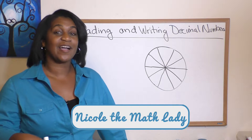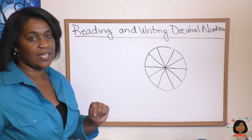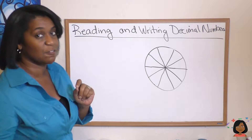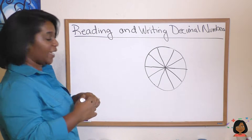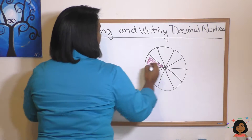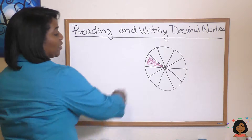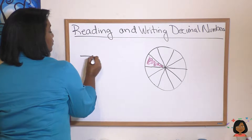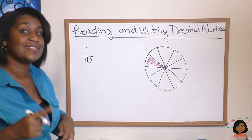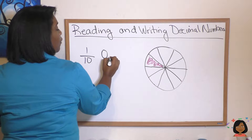Hi, it's Nicole, and today we're talking about reading and writing decimals. I have a handy dandy chart here — a little circle that's been divided into 10 pieces of pie. If I wanted to have one piece of pie, I'm going to highlight just one piece. In the fraction world, we'd write that as one tenth, because there are ten total and I've highlighted one piece. But I can also write a decimal for this, and that decimal would be zero point one.